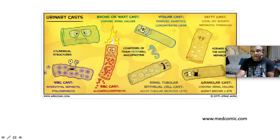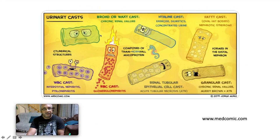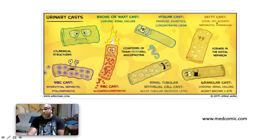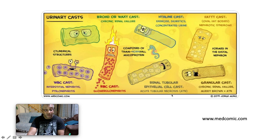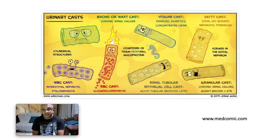This diagram from medcomic.com shows the different kinds of urinary casts. Broad or waxy casts occur in chronic renal failure. Hyaline casts can occur with exercise, diuretics, or concentrated urine. Fatty casts and oval fat bodies are pathognomonic for nephrotic syndrome. White blood cell casts occur with interstitial nephritis or pyelonephritis. Red blood cell casts occur with glomerulonephritis. Renal tubular epithelial cell casts occur with acute tubular necrosis (ATN) — the most common cause of AKI in hospital. Granular casts occur in chronic renal failure, but muddy brown casts occur in acute tubular necrosis.